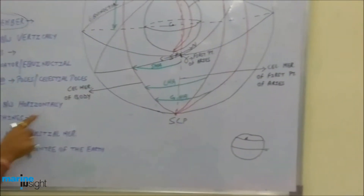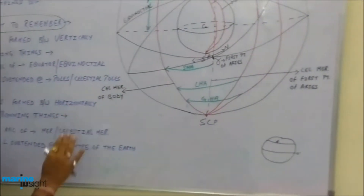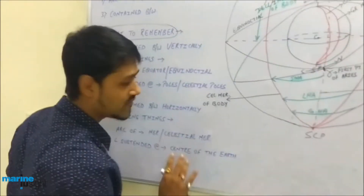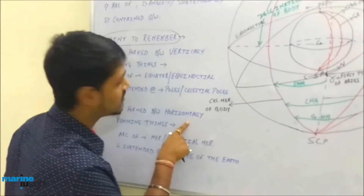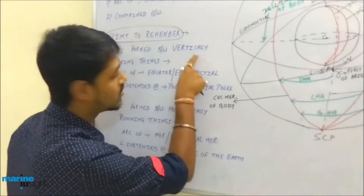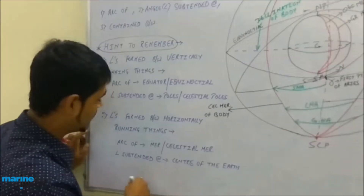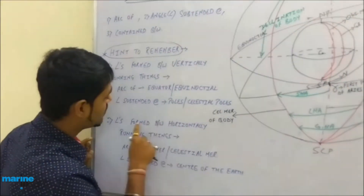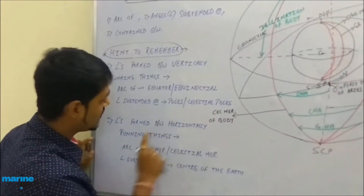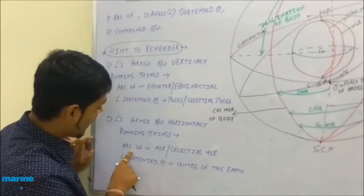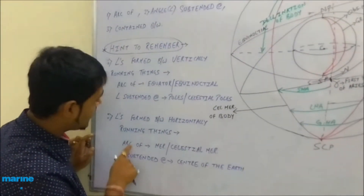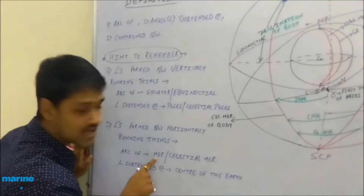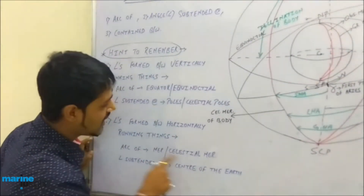Going back to the framework — if the angle is formed between horizontally running things, as in the case of latitude, then the arc will be of the meridian in case of earth. If defining something on the celestial sphere, it will be the celestial meridian.